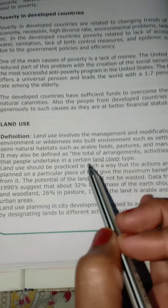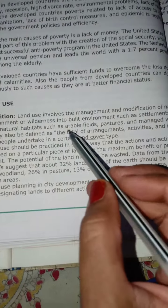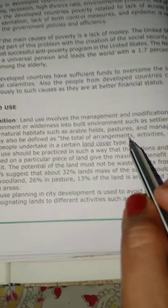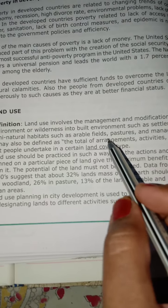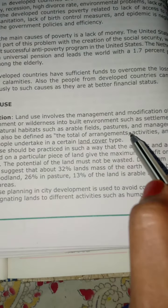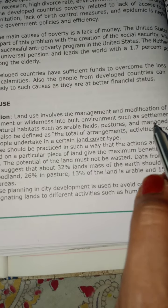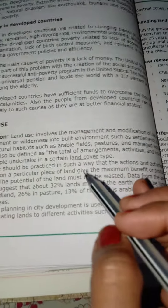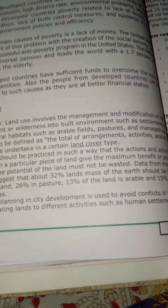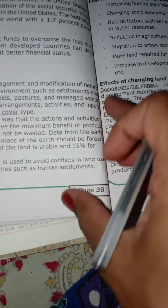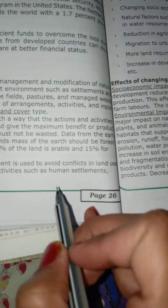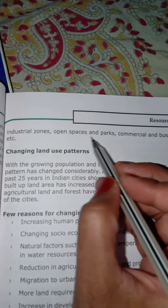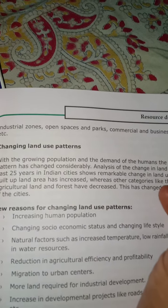Land use is defined as the usage of land in order to get maximum benefit. We must know what kind of land it is — arable land or pasture land — whether it is good for cultivation or settlement areas, so that it can be used to maximum benefit. Land can be used for human settlements, building industries, creating open spaces and parks, or commercial business purposes.